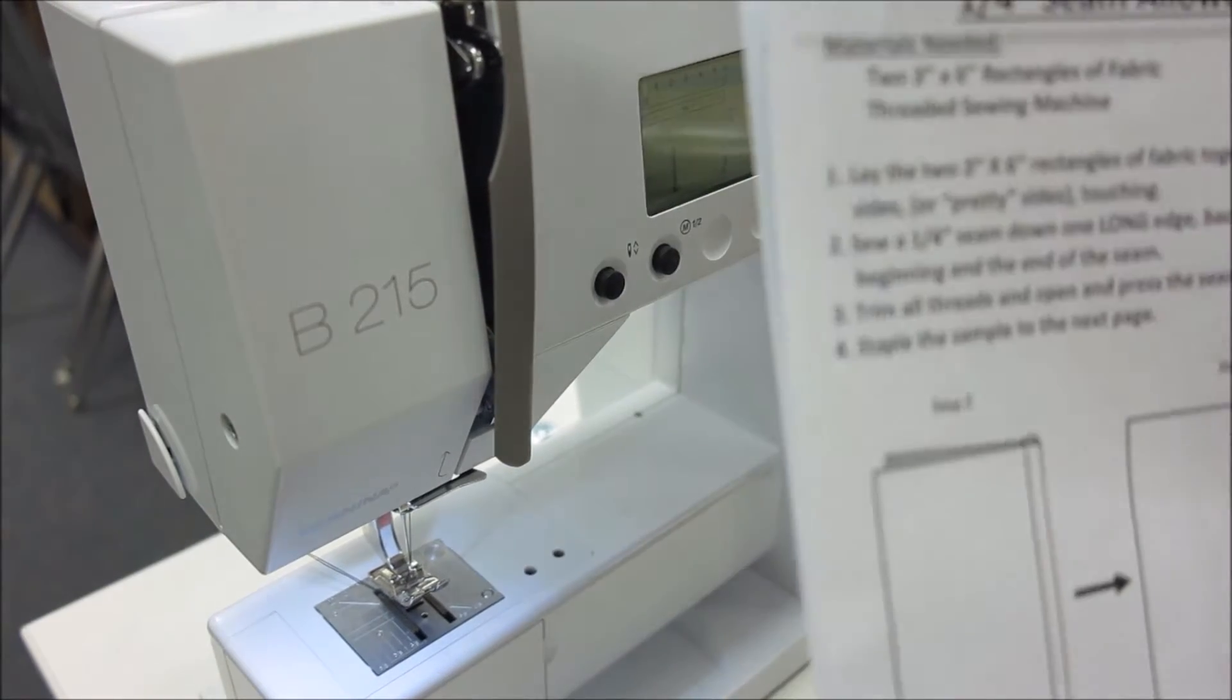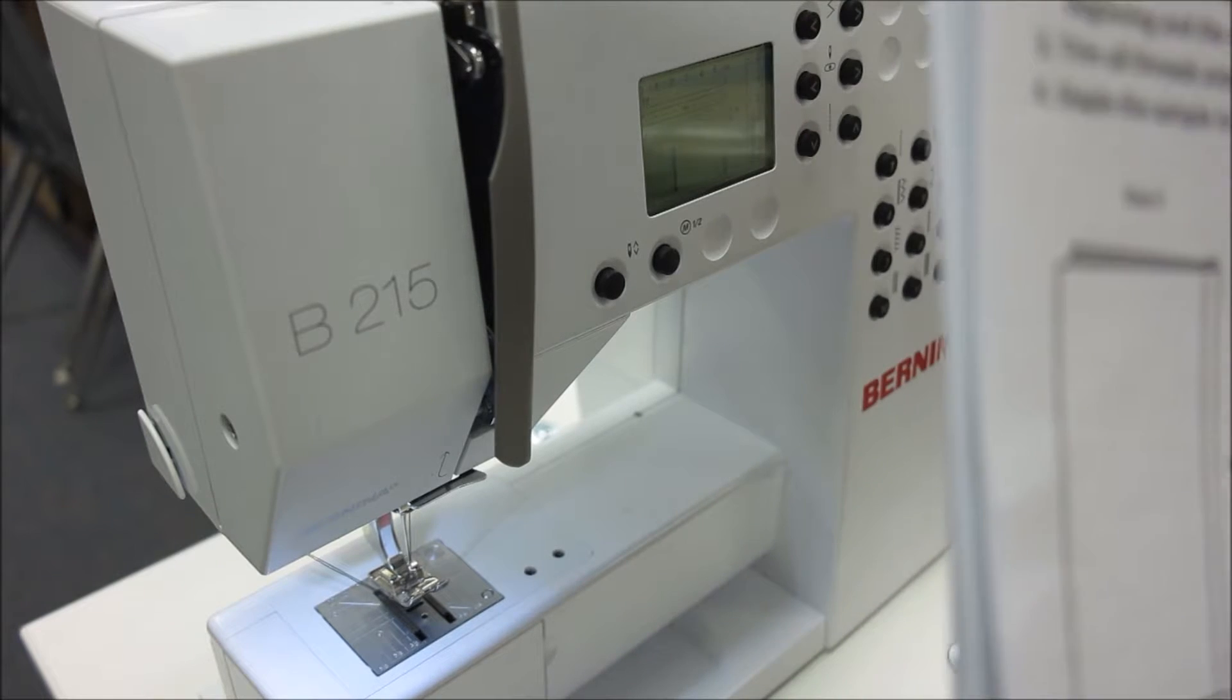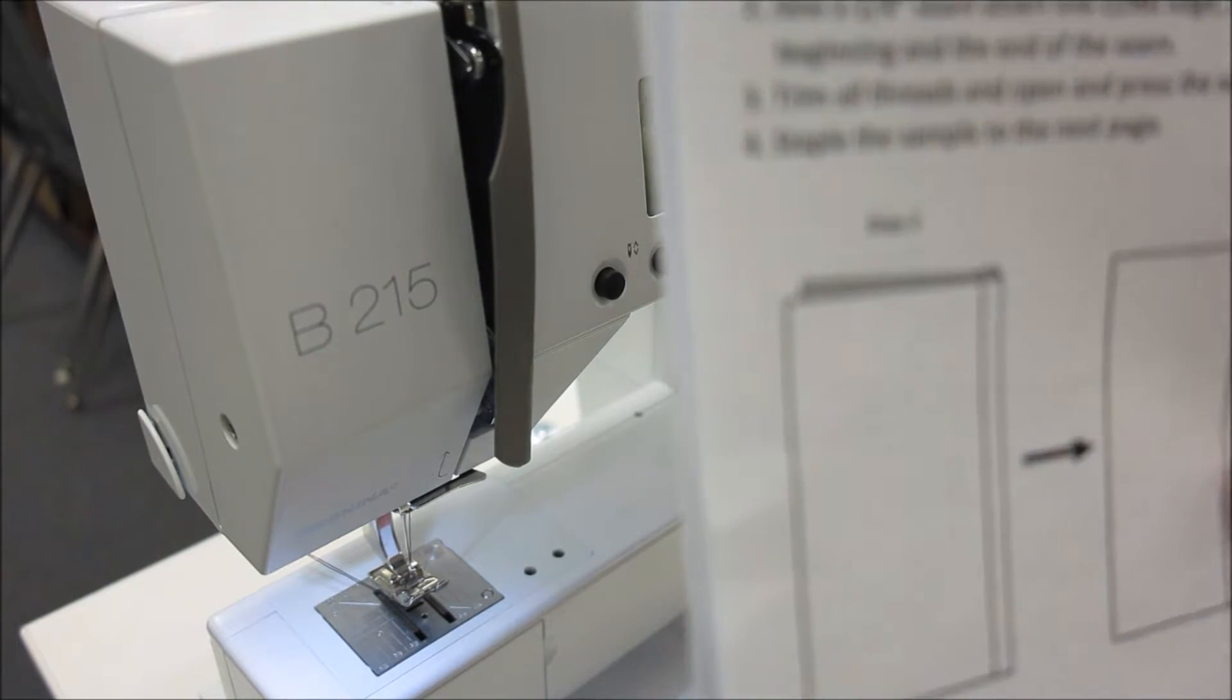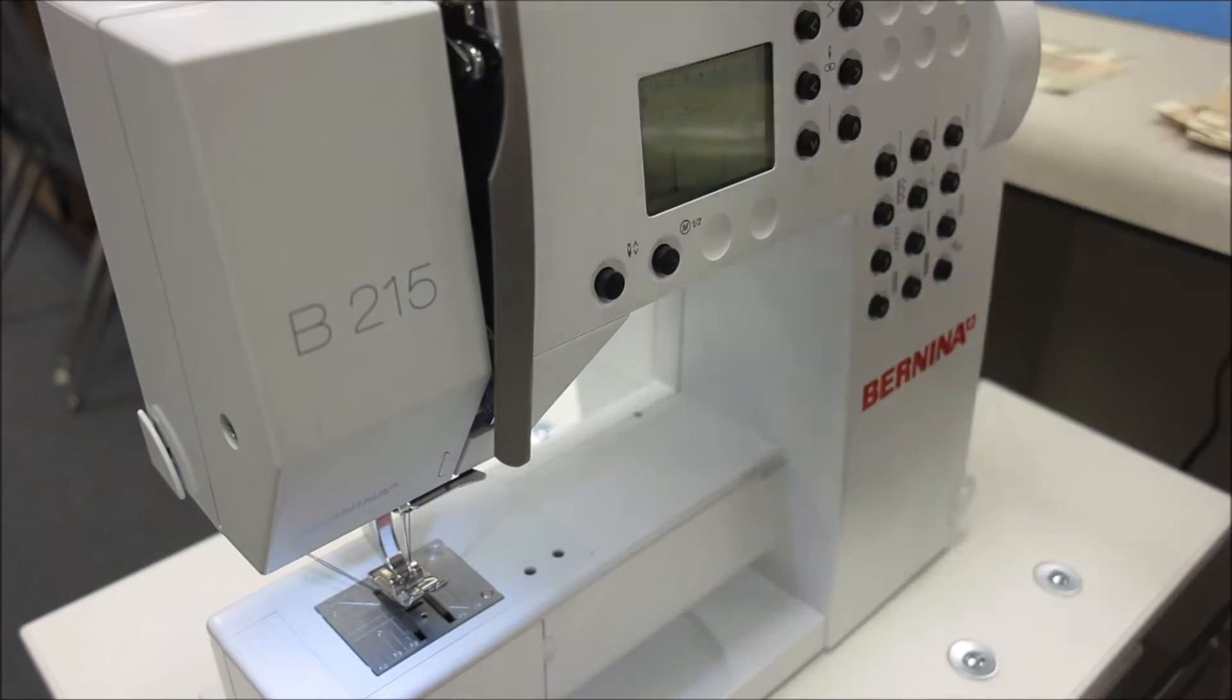We're going to continue reading on. It says, trim all threads, and open and press the seam allowance to one side. So this time we're not pressing it open, we're just pressing it to the side.